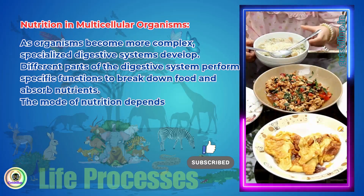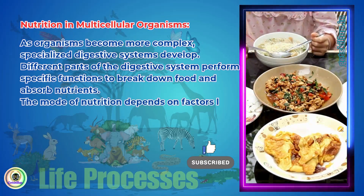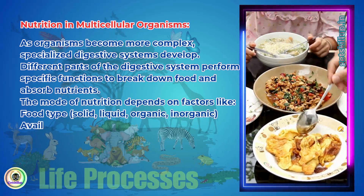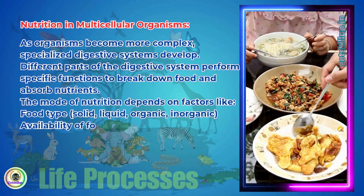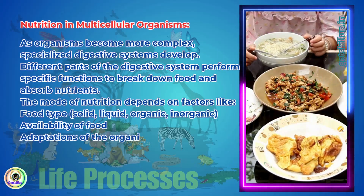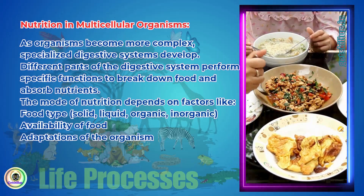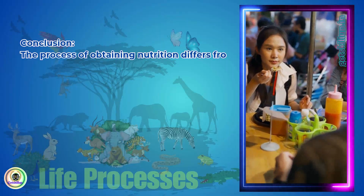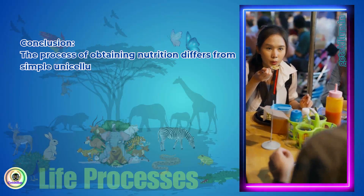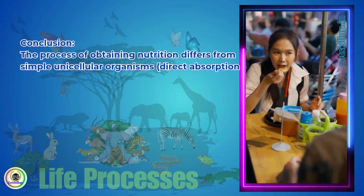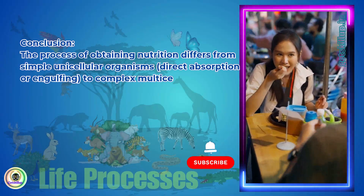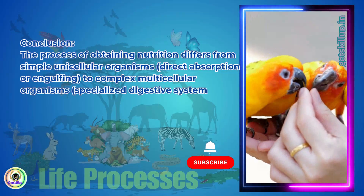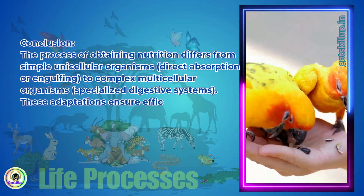The mode of nutrition depends on factors like food type (solid, liquid, organic, inorganic), availability of food, and adaptations of the organism. In conclusion, the process of obtaining nutrition differs from simple unicellular organisms — direct absorption or engulfing — to complex multicellular organisms with specialized digestive systems. These adaptations ensure efficient energy extraction and survival.